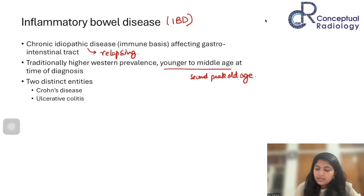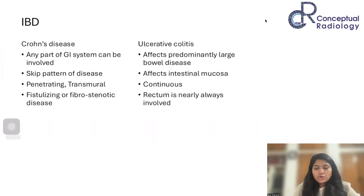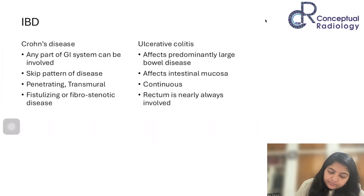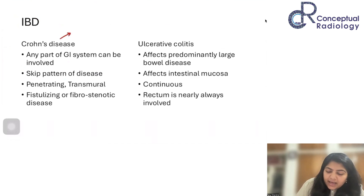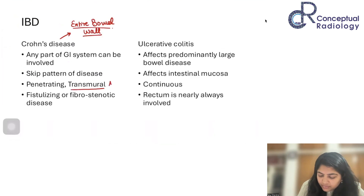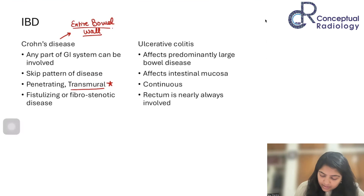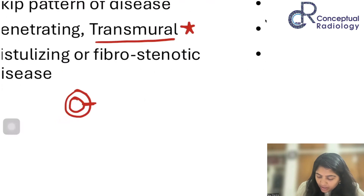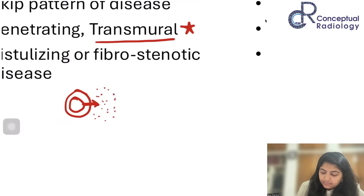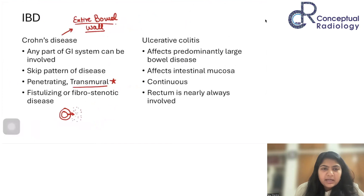Crohn's disease and ulcerative colitis have a different kind of pathophysiology. The most important part of Crohn's disease is that whatever inflammation takes place involves the entire bowel wall — the word we use is transmural. In transmural inflammation, the entire bowel wall gets inflamed, and because the inflammation is going across and beyond the wall, you will have a lot of adjacent changes as well. This is the most important thing to understand in the pathophysiology of Crohn's.